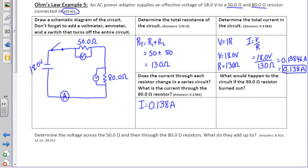The final part of this question says, what would happen to the circuit if the 50 ohm resistor burnt out? And remember, in a series circuit, if one goes out, they all go out.